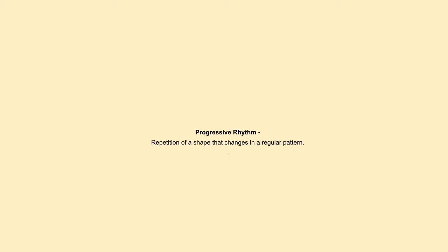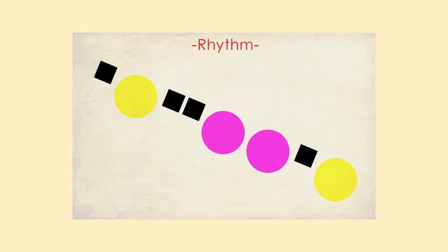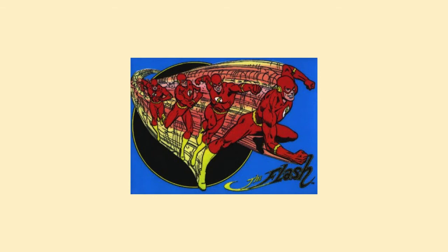Progressive rhythm is the repetition of a shape that changes in a regular pattern. Here we have a rhythm that is changing regularly. Here we have a more naturally occurring example with fence posts, and they create this kind of double rhythm. Here we have a rhythm created by circles coming towards us, and that repetition is really emphasizing one element coming towards us and one going from left to right. Motion in comic books is often achieved by using repetition and this rhythm of motion.